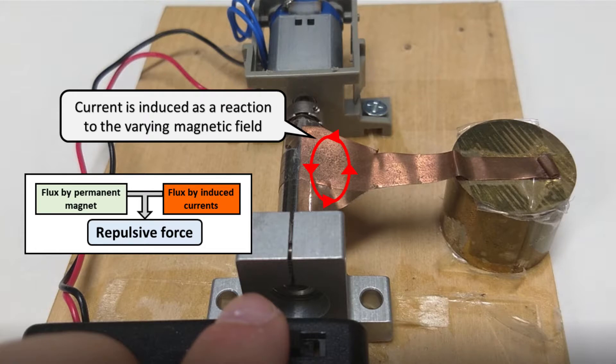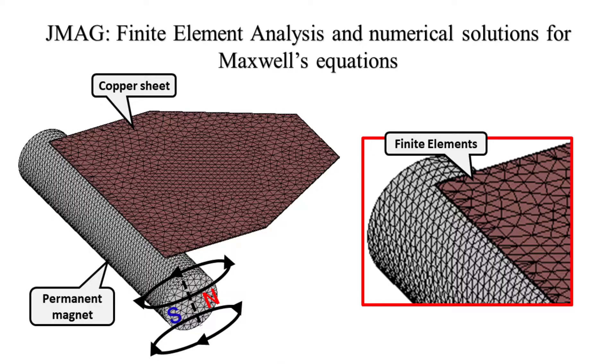During the experiment we could see clearly that there is a repulsive force between the copper sheet and the permanent magnet. But we cannot see the currents that are flowing in the copper sheet. If we want to see the currents, we have to use computer simulations.